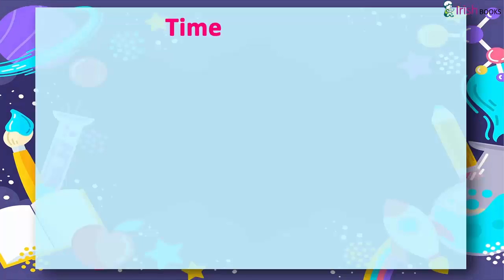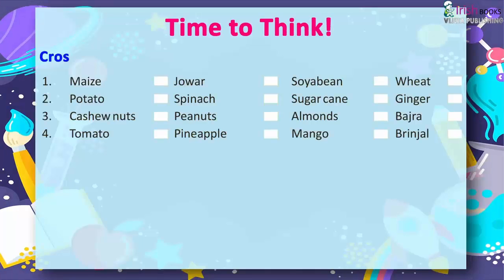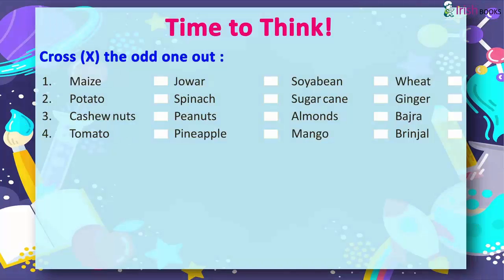Time to Think: Cross the odd one out. 1. Mace, Jowar, Soya Bean, Wheat.